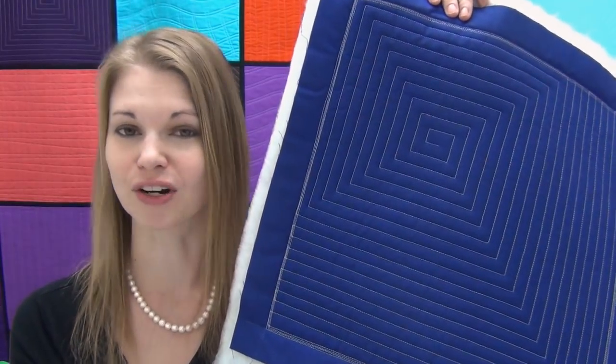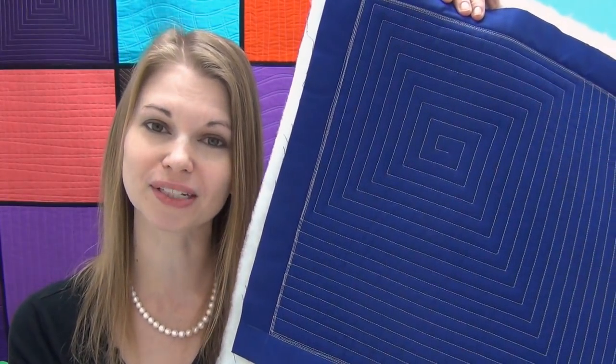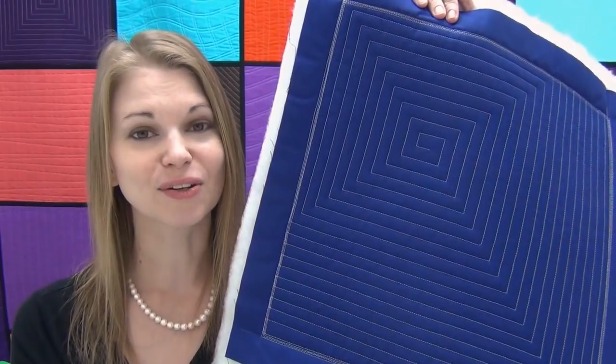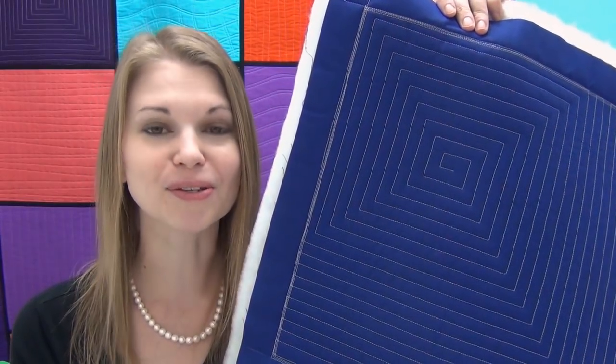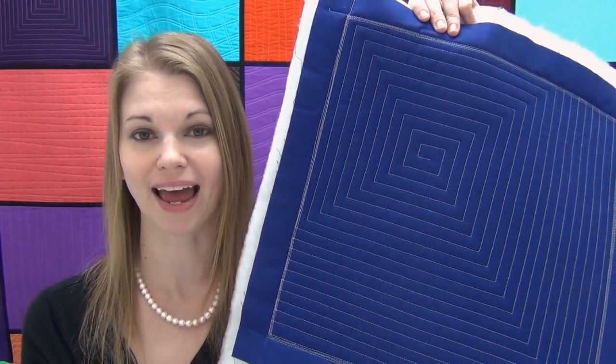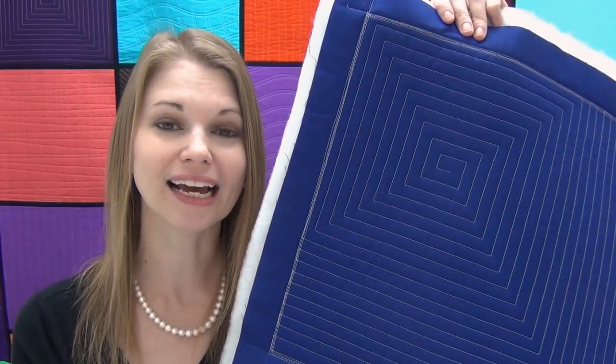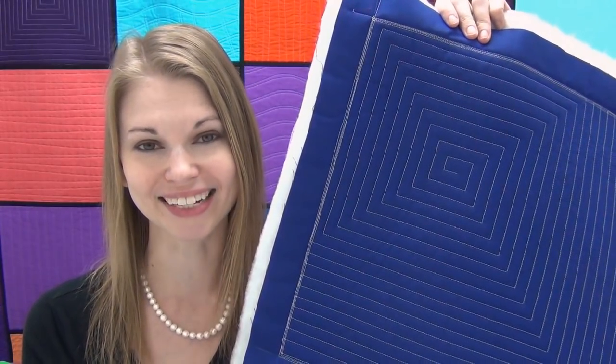Well here is a much easier and faster design to stitch called Square Spiral. It's basically the same texture, nice square shapes on your quilt top, but you get to stitch it as a spiral so you don't have to stop and break thread. So let's jump on the machine. I can't wait to teach you how to quilt this with your walking foot.